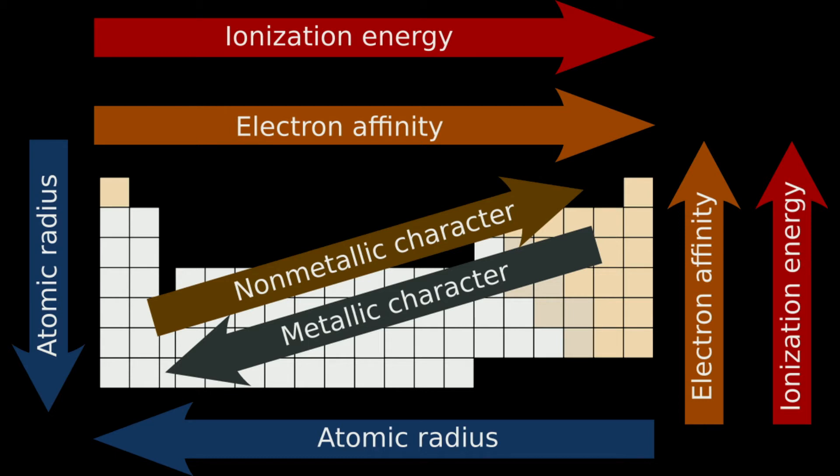You can also find the charge of an atom by going from left to right too. Starting on the left is plus 1, plus 2, then skipping over the transition metals, it's plus 3, then plus 4. Then you get to negative 4, negative 3, negative 2, negative 1, then the charge of 0.